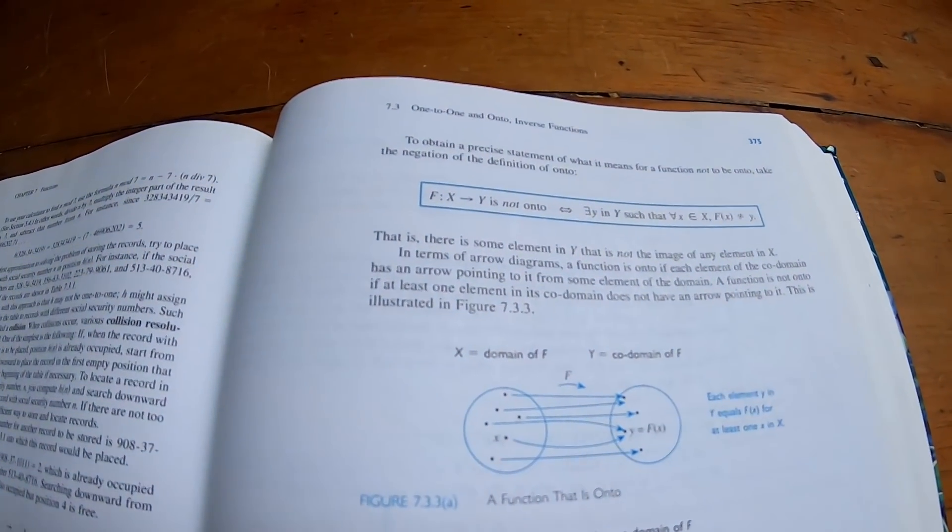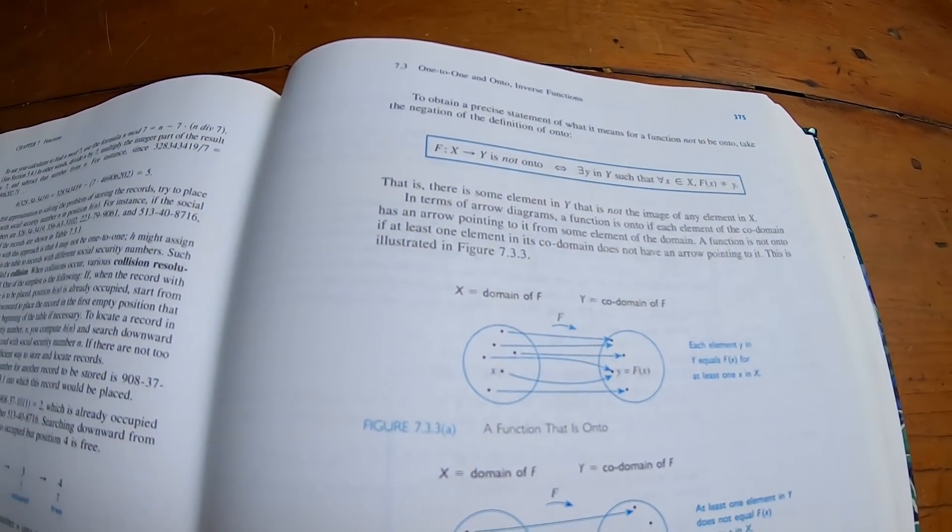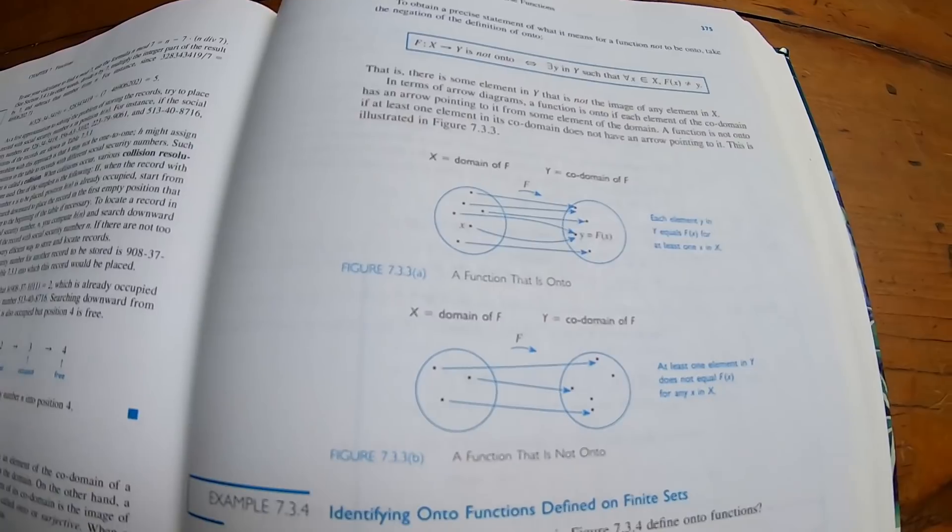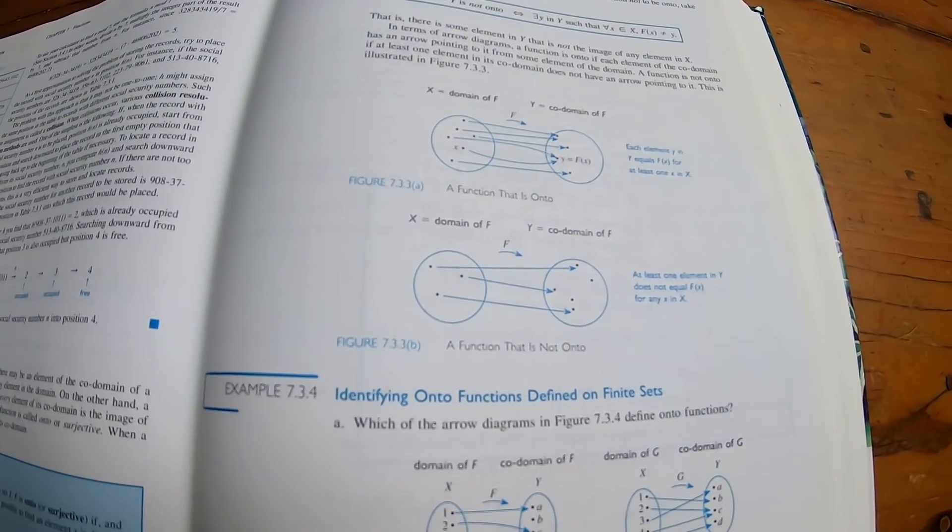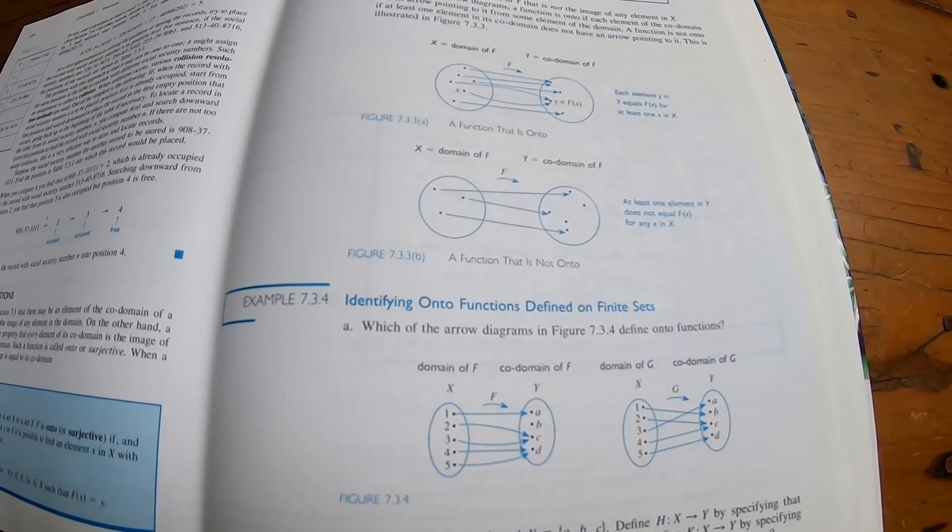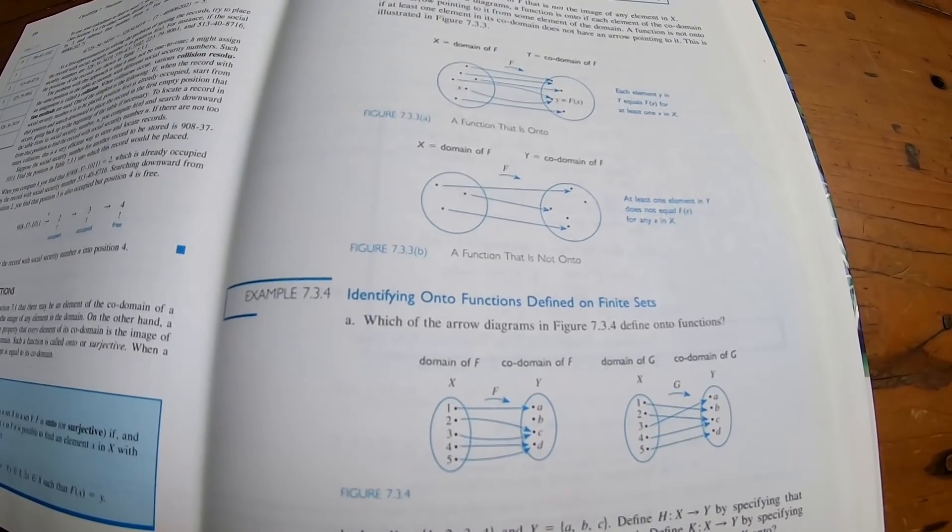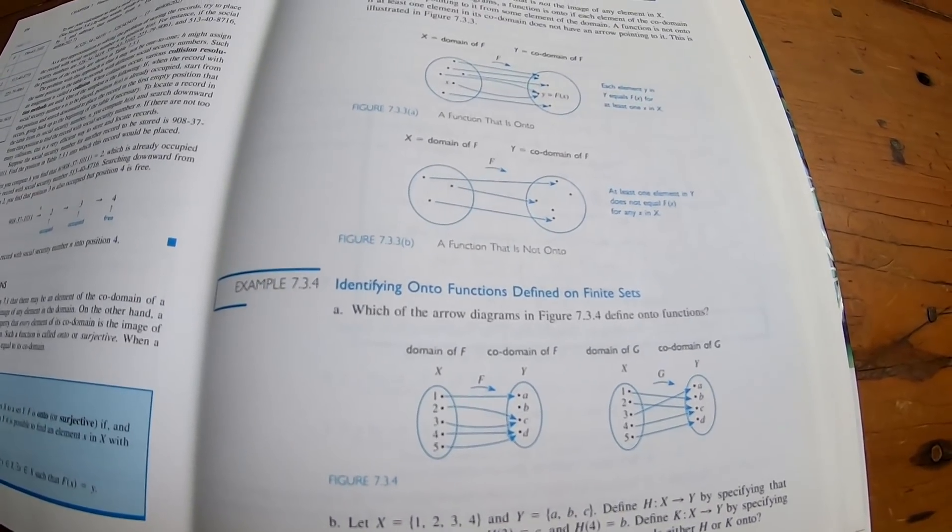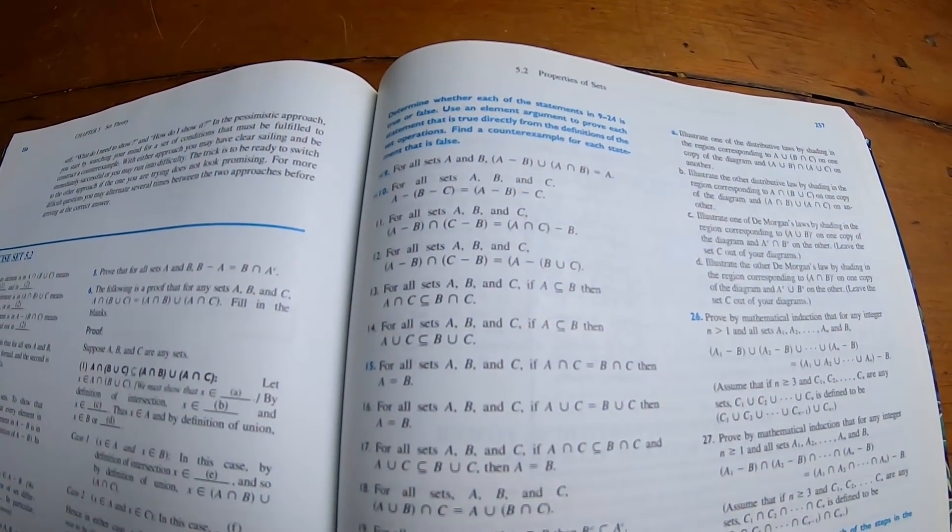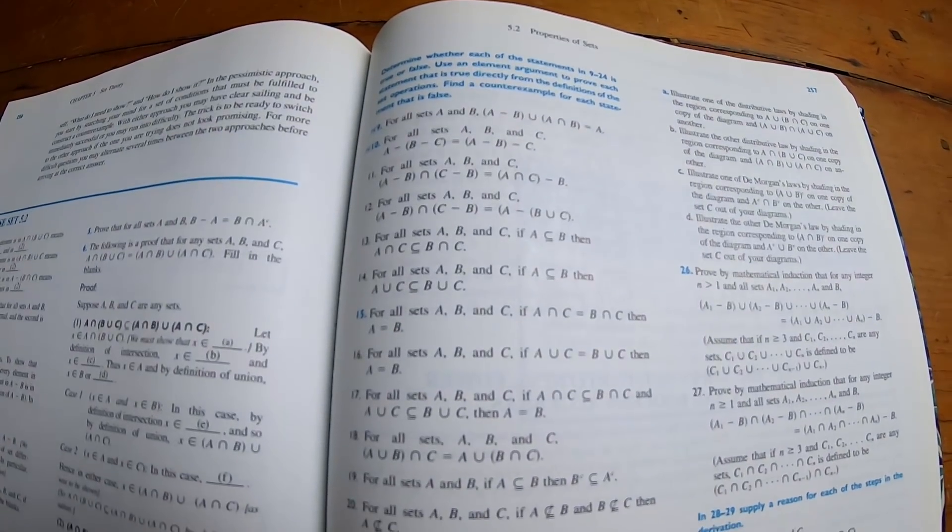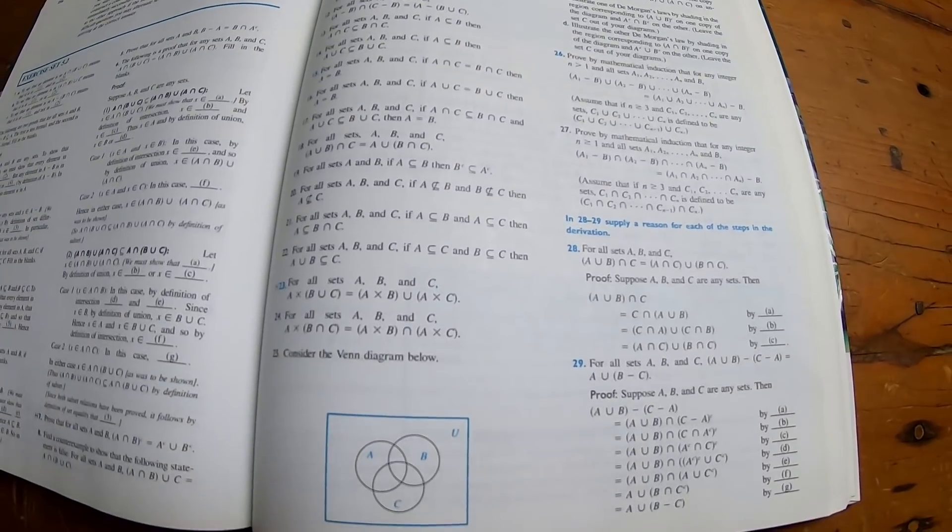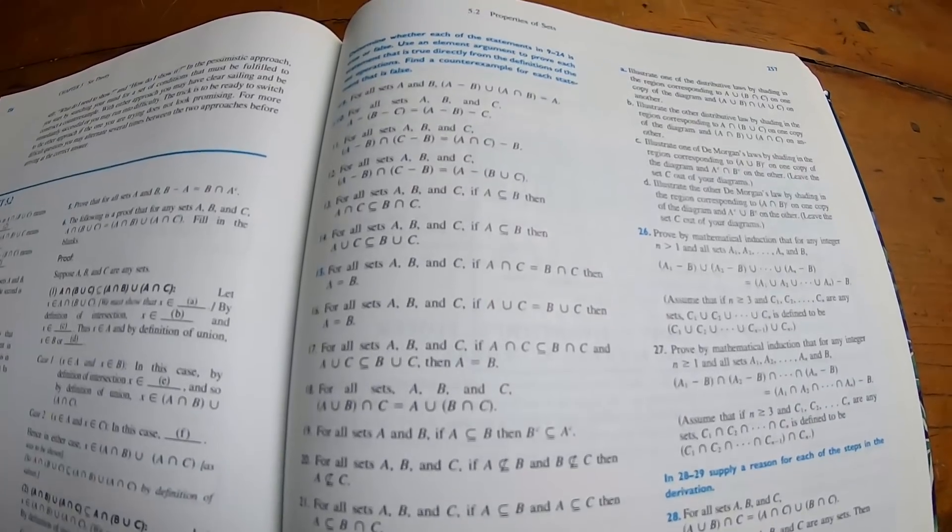This is the section on one-to-one and onto and inverse functions. Susanna does a really good job in this section explaining the concepts. You can see the diagrams there with pictures of the domain and the co-domain. I think this would be really good for people who are trying to learn discrete math on their own, or taking a class on discrete math. As most discrete math books do, she provides a good variety of exercises on sets. This is usually a pretty good section in most discrete math books, and Susanna does a pretty good job here.